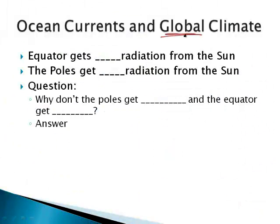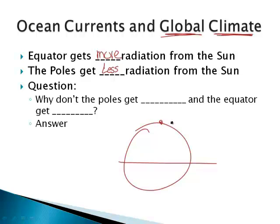Now, ocean currents and global climate. Last time I was talking about regional, but what about the entire global climate? Here's an interesting issue. The equator gets more radiation from the sun, and the poles get less radiation from the sun. Well, that makes sense. You've got the Earth - the North Pole and South Pole get less energy, and the equator gets more. But here's the question: Why don't the poles get colder and why don't the equator get warmer? If constantly more energy is going into the equator and less energy into the poles, why doesn't the temperature of the equator get higher and higher every year and the poles get lower and lower every year?